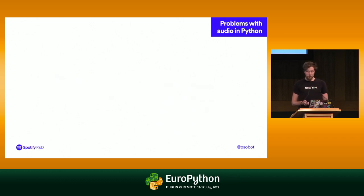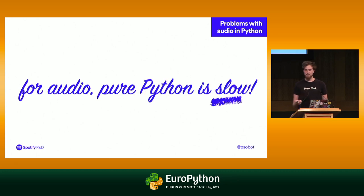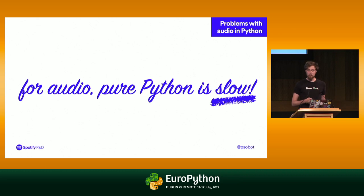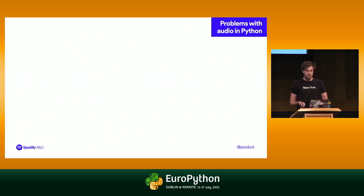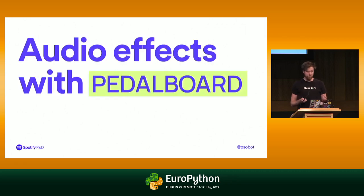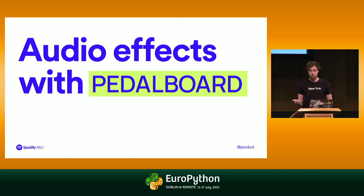The last thing I want to say here is that for audio, pure Python is slow. Pure Python iterating through samples and doing direct math can be very, very slow compared to native-optimized C code. So if you can, use third-party libraries instead. And that brings me to my final section: audio effects in Pedalboard. We've talked about how to do some of these effects ourselves in pure Python, but what if we use this cool library to do some of these effects for us?